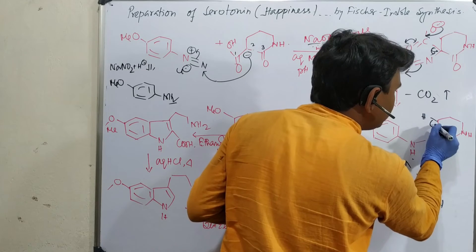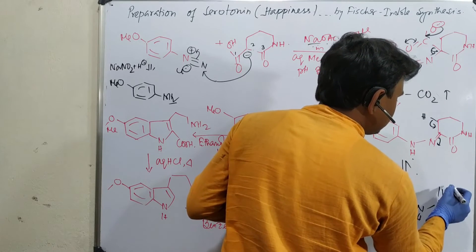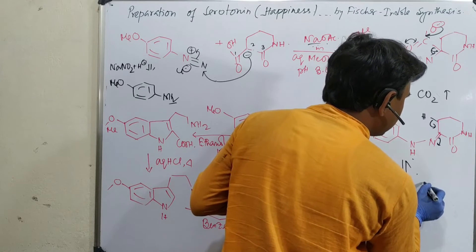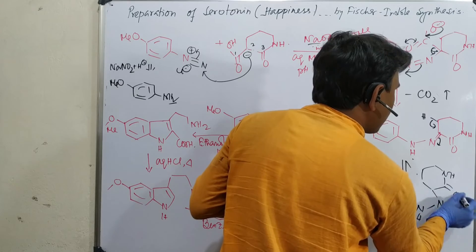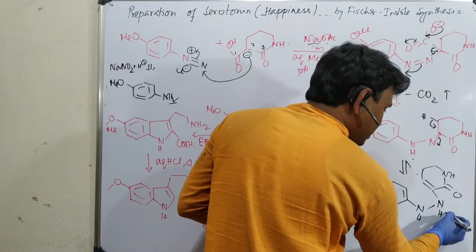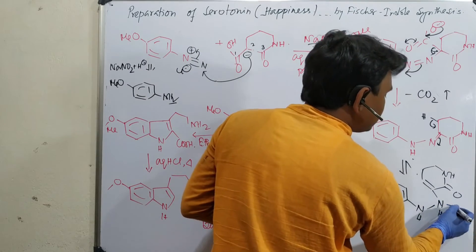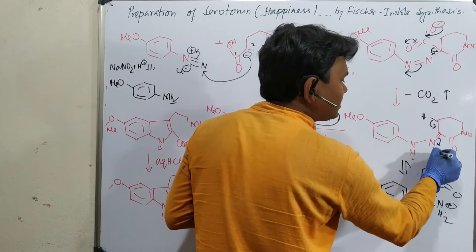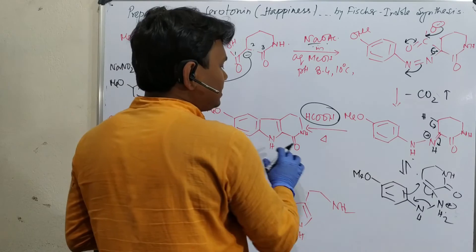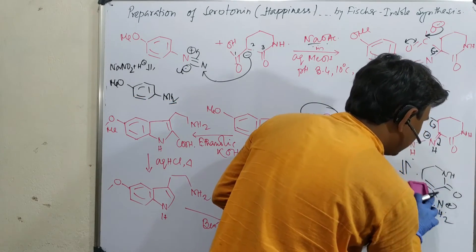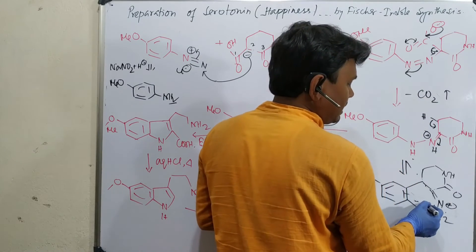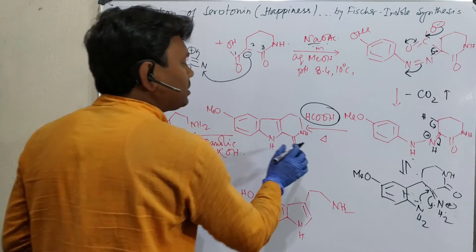This proton could undergo tautomerization. It is also protonated, because formic acid is given. Protonation facilitates this tautomerization. After that, the 3,3-sigmatropic shift is possible. Ultimately, this bond formation occurs — aromatization is straightforward. Then this lone pair attacks here, it opens up and produces the indole ring.